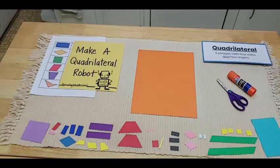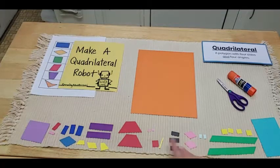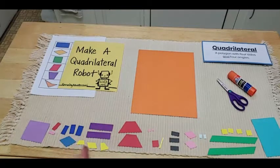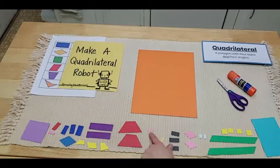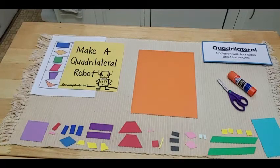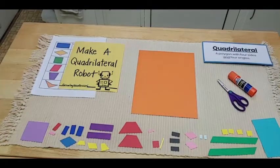And you'll see, I already cut out a bunch of different quadrilaterals. Down here, I have my rhombus. I have some trapezoids. I have some rectangles of different sizes, shapes, and colors. I have squares, small squares, medium, and even large squares. So let's get started.